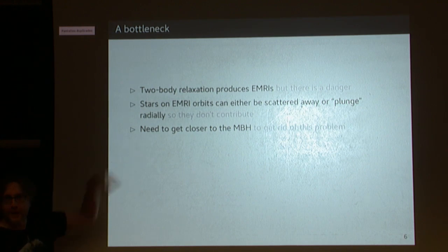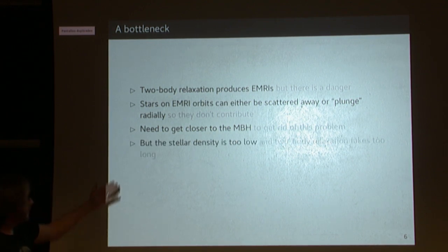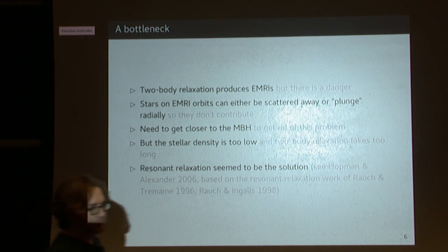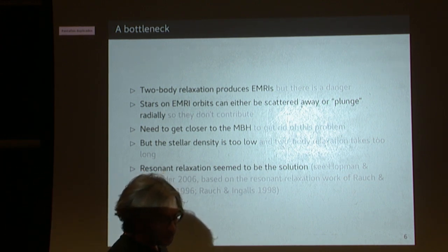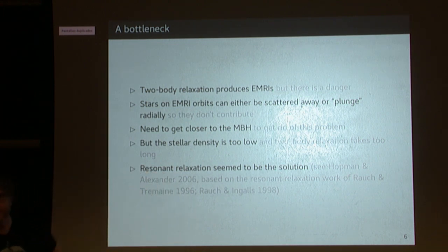That would be basically a head-on collision with a supermassive black hole. You get one or two intense bursts of gravitational radiation, but you don't get thousands or hundreds of thousands of them from a coherent source. The fix would be to get closer to the supermassive black hole, but then the stellar density decreases and the associated relaxation time scale increases a lot.